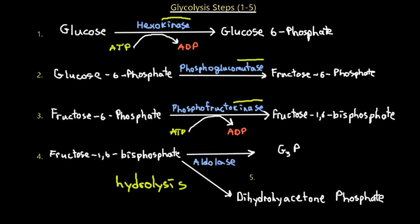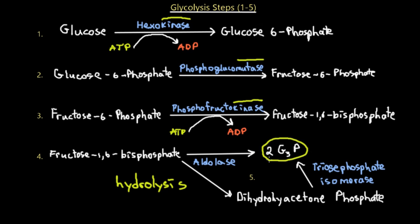Step five — the final step of the energy-requiring phase: an isomerase enzyme transforms the dihydroxyacetone phosphate (DHAP) into a second G3P molecule. We have now produced two G3P molecules and consumed two ATP molecules total. This completes the energy-requiring phase of glycolysis.